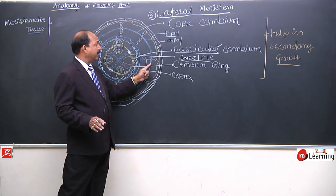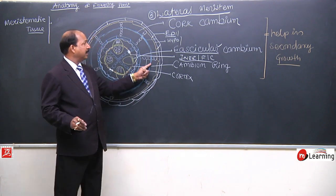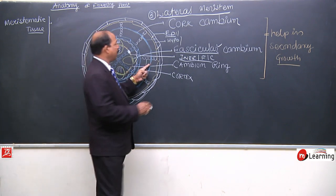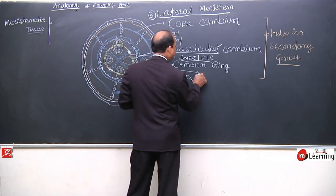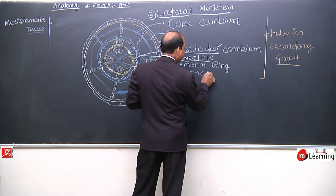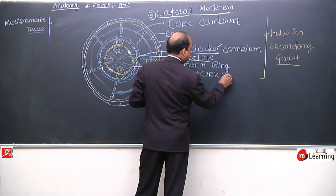And finally, cork cambium. What was the name given to it? Cork cambium. It was formed as a protective layer after the epidermis ruptured.